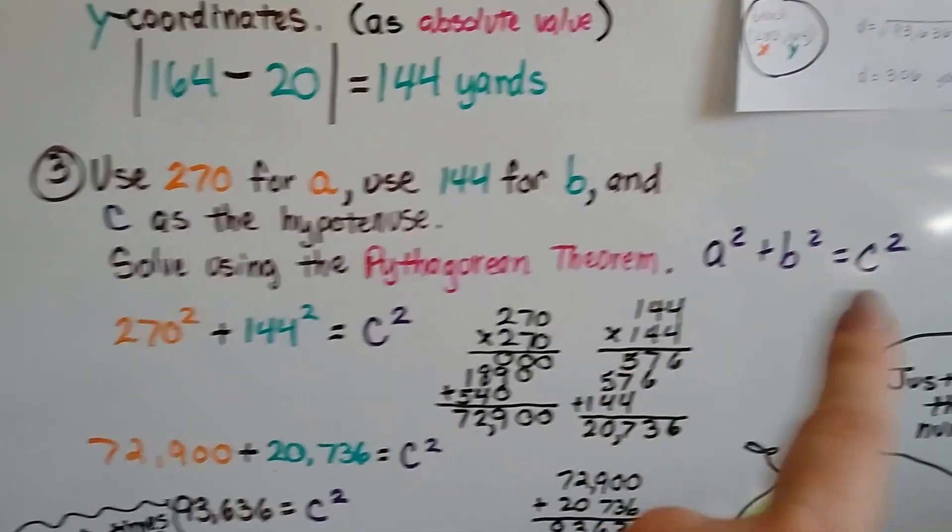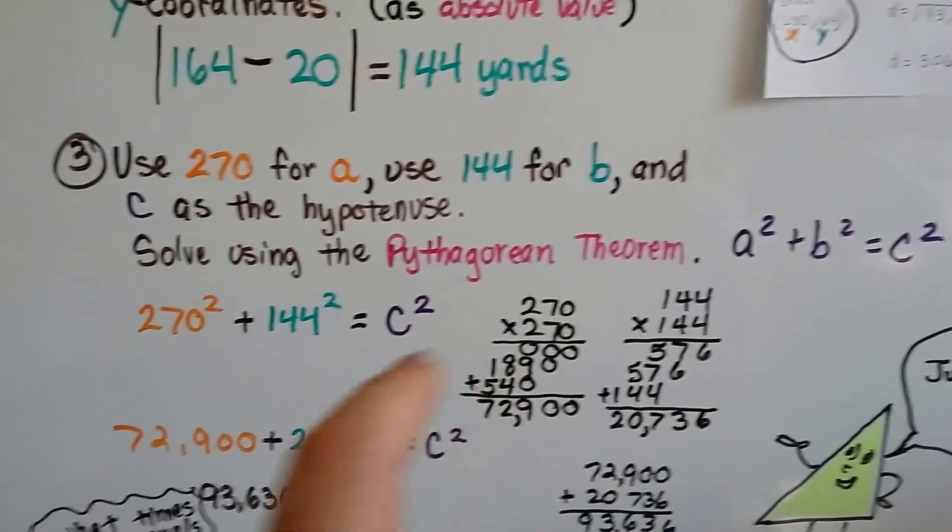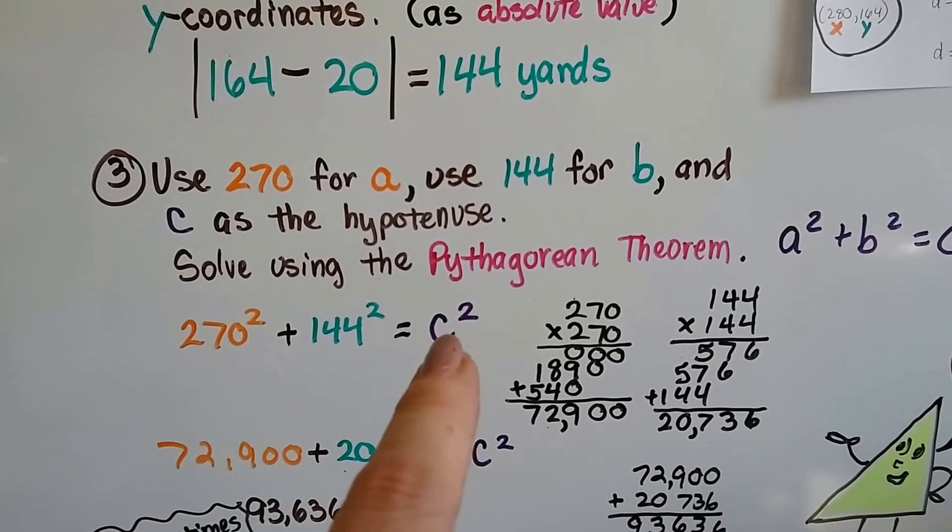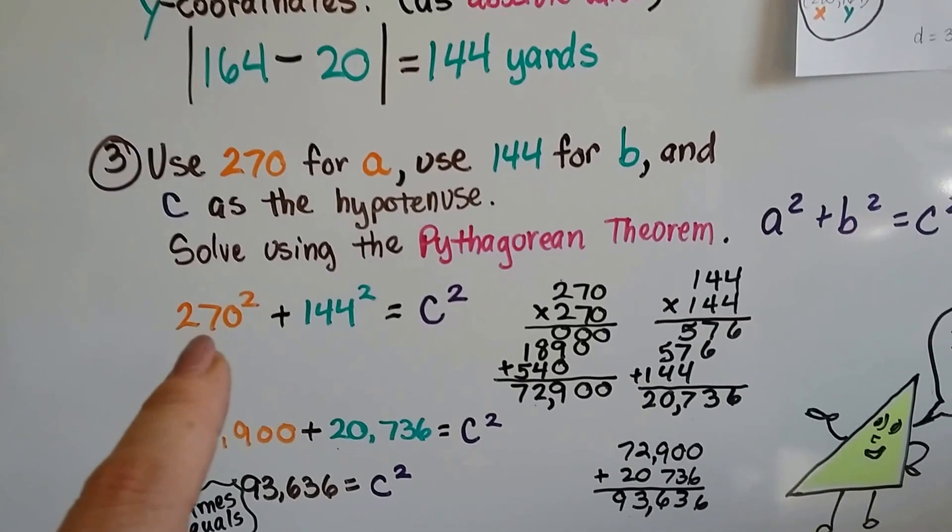So we write it as the Pythagorean theorem, a squared plus b squared is c squared, and we get 270 squared plus 144 squared equals c squared. So now we need to find out what these are.